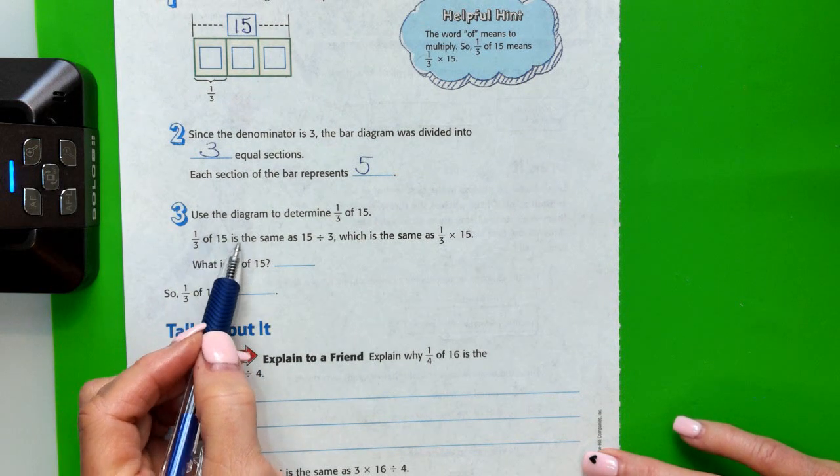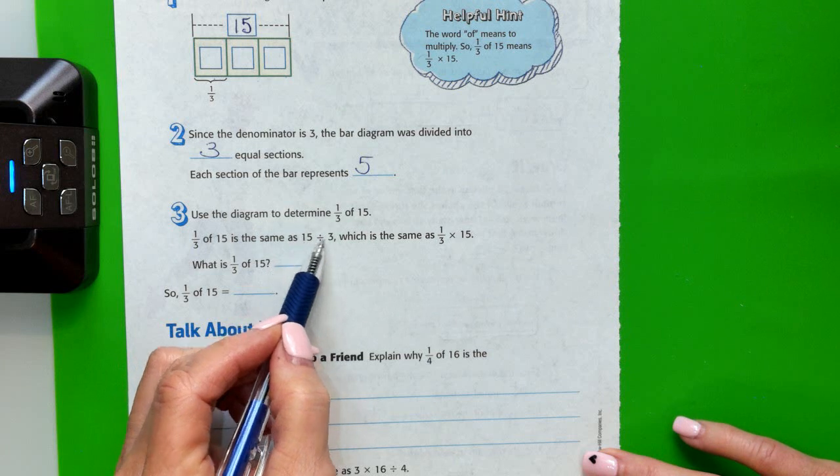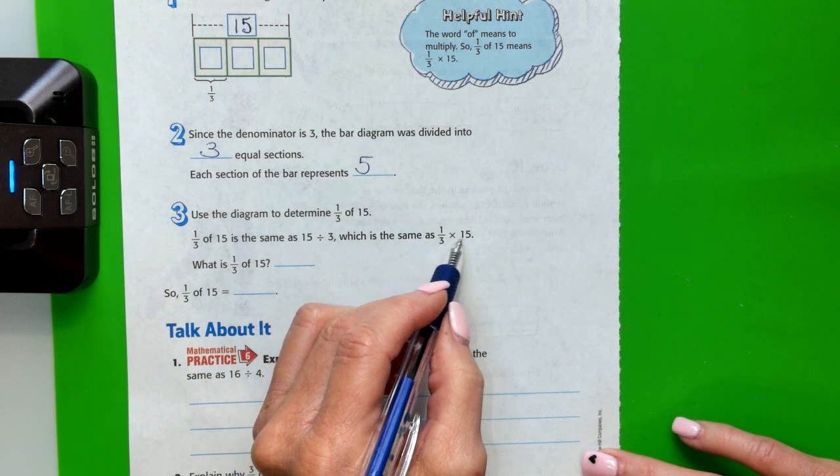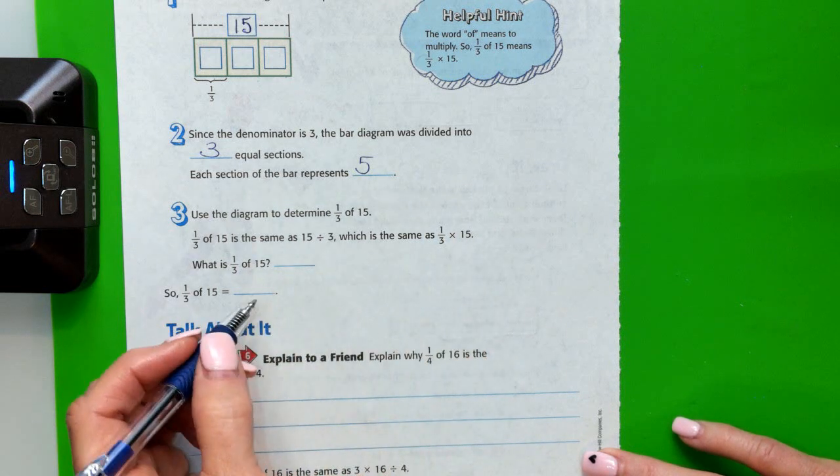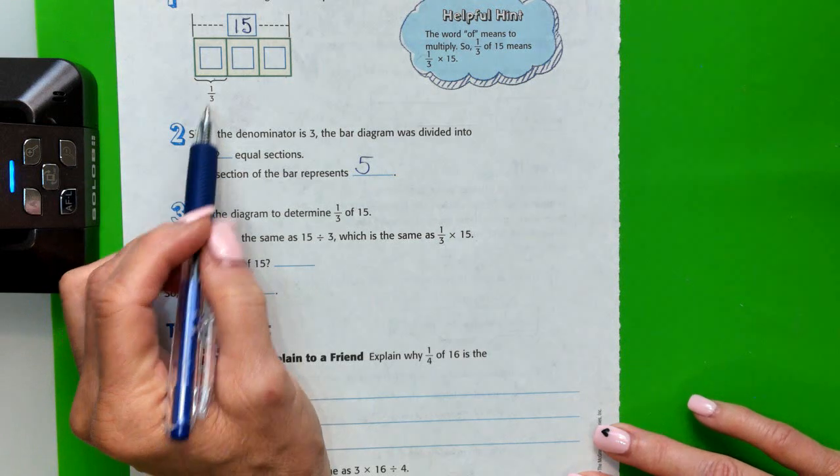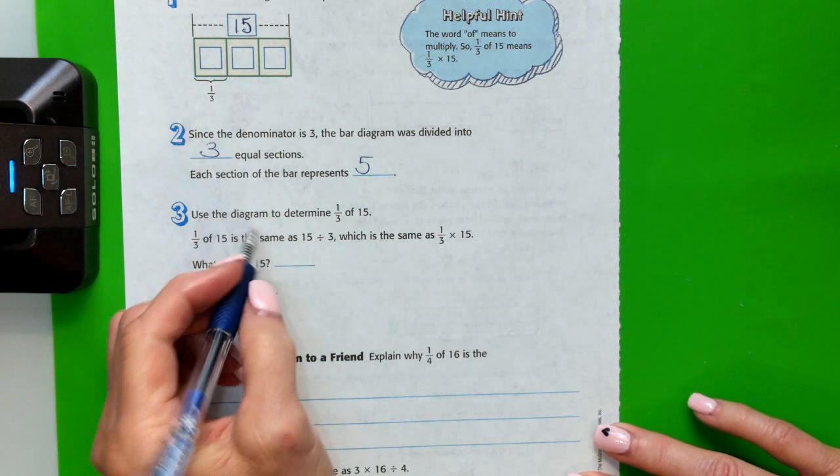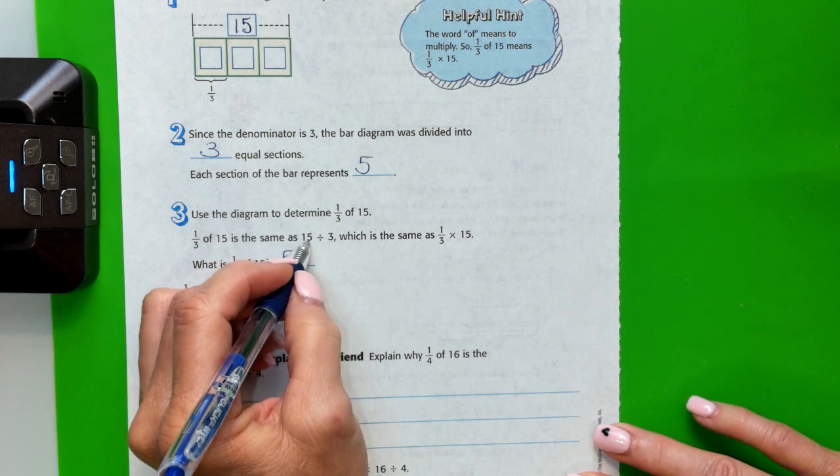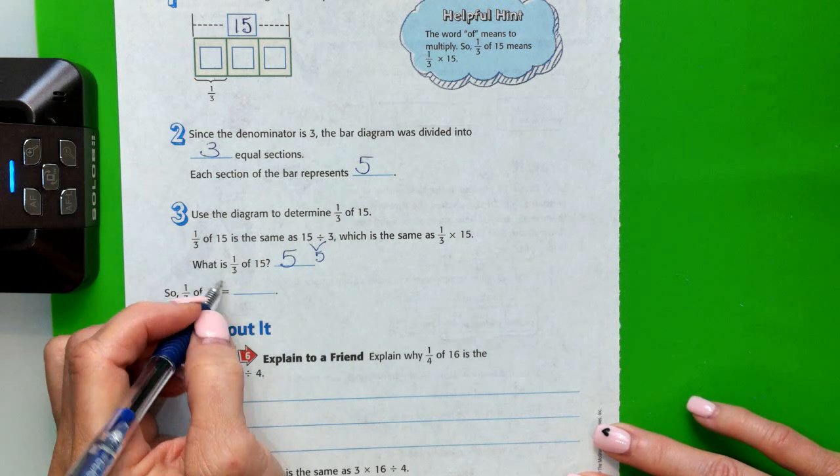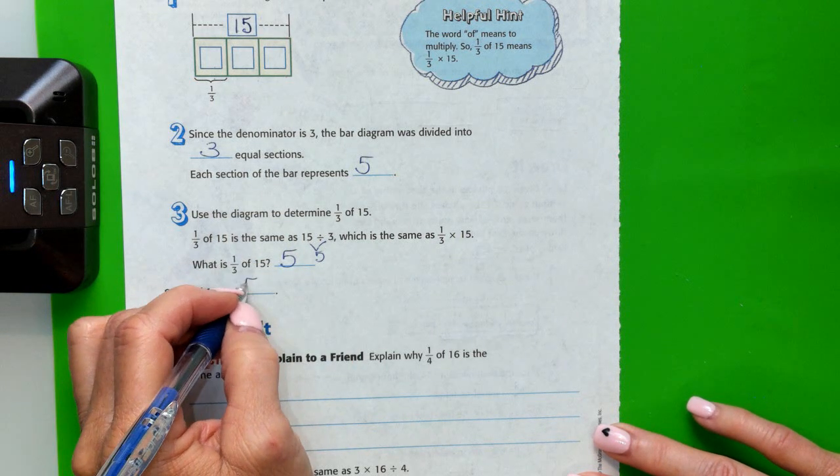So 1 third of 15. So 1 third of 15 is the same as 15 divided by 3, which is the same as 1 third times 15. So what is 1 third of 15? Well, 1 third of that 15 is 5. 15 divided by 3 is 5. So 1 third of 15 equals 5.